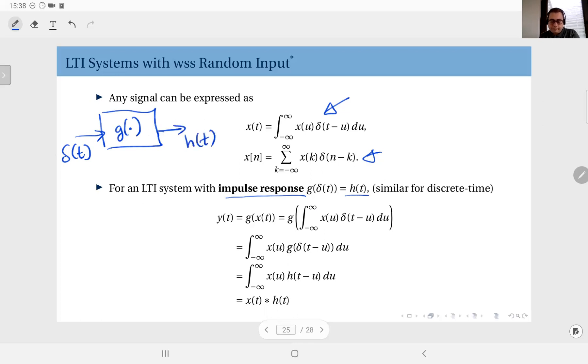For a discrete time system, if you apply an impulse, again you obtain what we call the impulse response. So impulse response in short is the output of the system when the input is an impulse.